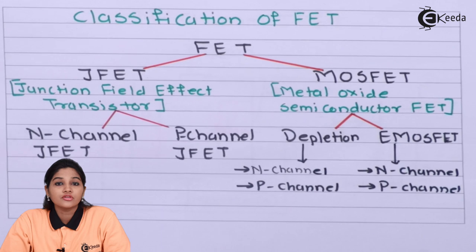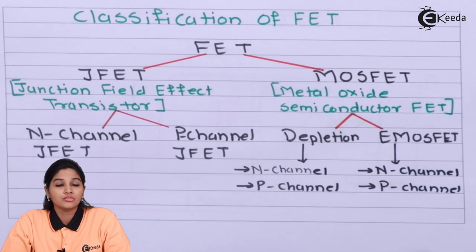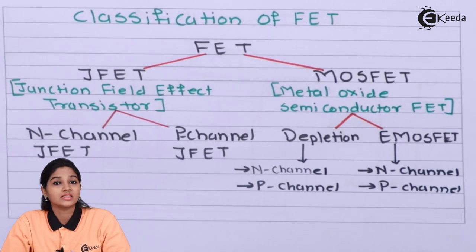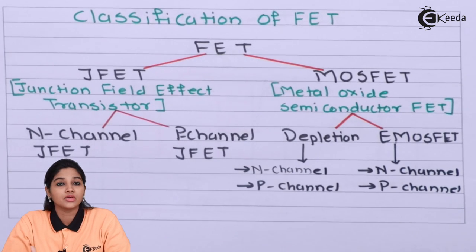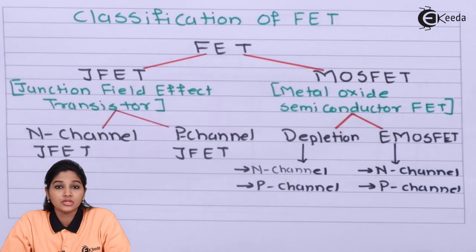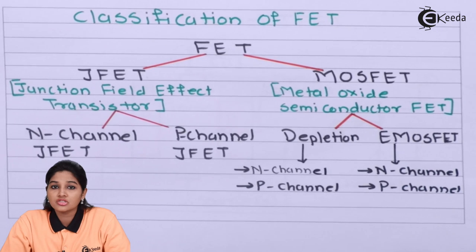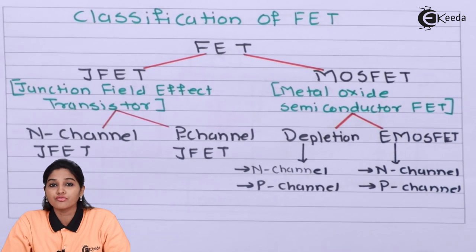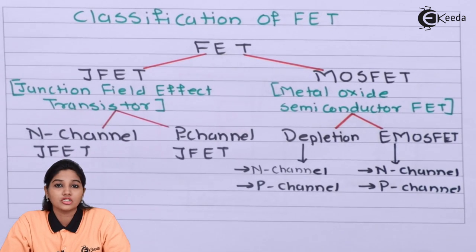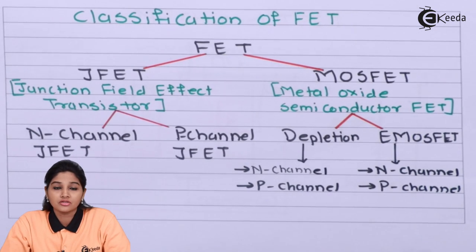FET is considered one of the most important semiconductor devices, used after BJT. But compared to BJT, FET has many advantages: better thermal stability, less noise, high input impedance, and can be used at high frequency. Because of these advantages, FET is preferred over BJT in many applications like integrated circuits, digital switches, amplifiers, and amplitude modulation.